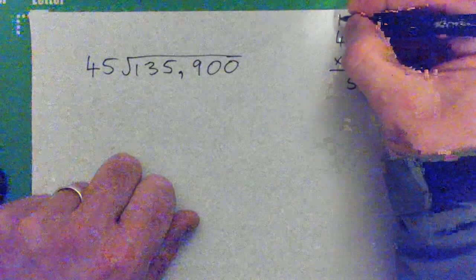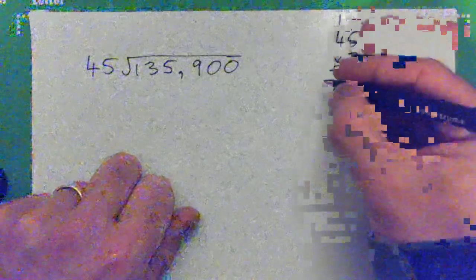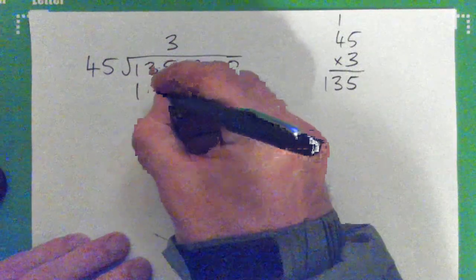Carry 1. 3 times 4 is 12 and 1 is 13, beautiful. Okay, so 3 works. 3 times 45, 135. Subtract and we get 0.